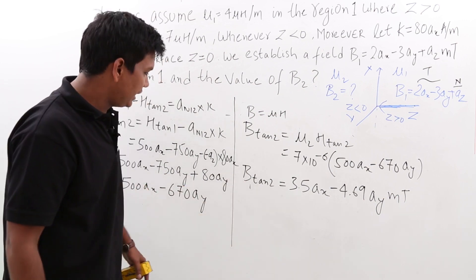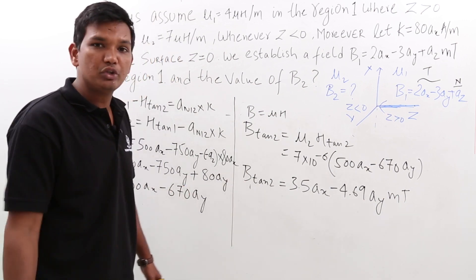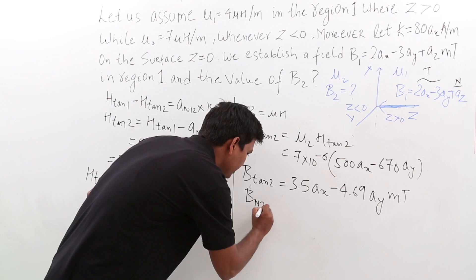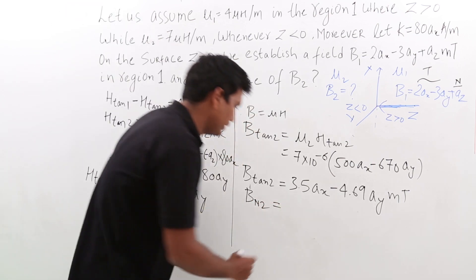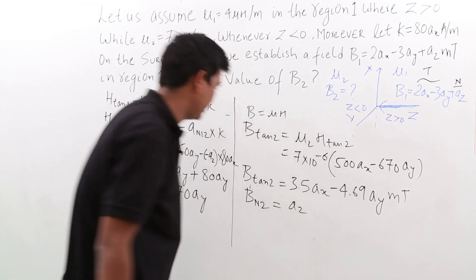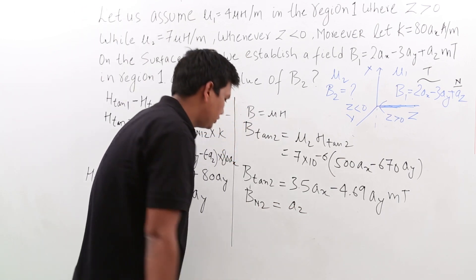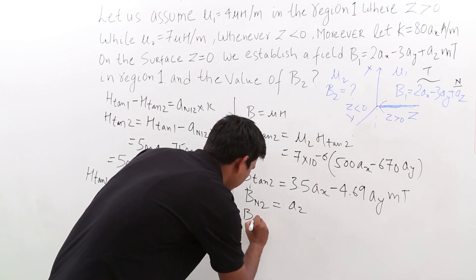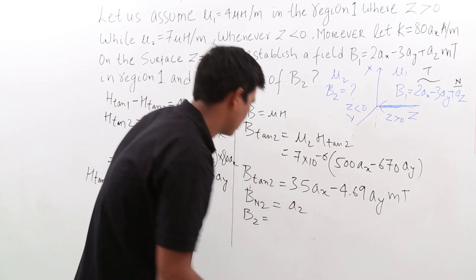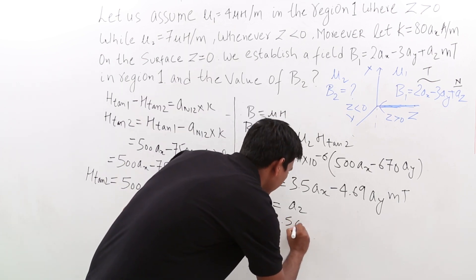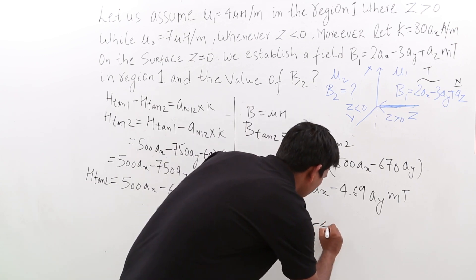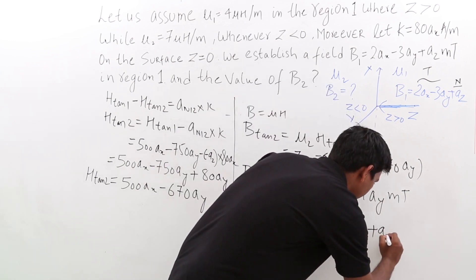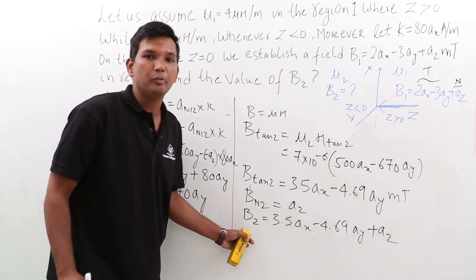Now we have both components. B_N2 = A_z (found earlier) and B_tan2 = 3.5 A_x minus 4.69 A_y. Therefore, B2 = B_N2 + B_tan2 = 3.5 A_x minus 4.69 A_y plus A_z. We have found the magnetic field B2 in region 2.